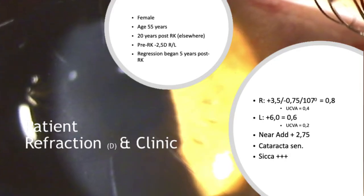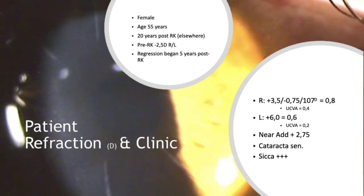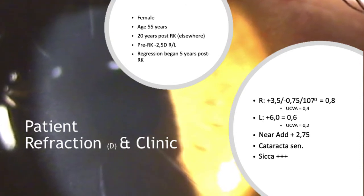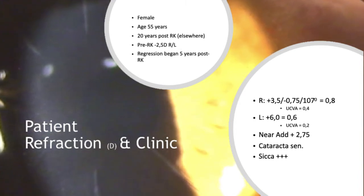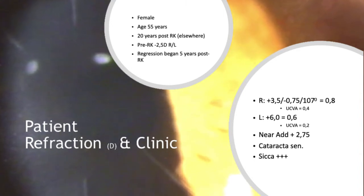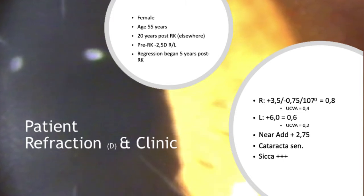At the time of surgery, our patient was 55 years of age. She had an RK 20 years ago elsewhere. The primary pre-refraction was minus 2.5 diopters, and regression set in 5 years after the refractive surgical procedure and continued for about 10 years. Meanwhile, she turned out to become hyperopic with plus 3.5 diopters on the right eye and plus 6 diopters on the left eye. Uncorrected visual acuity was 0.4 on the right and 0.2 on the left eye. Best corrected visual acuity was 0.8 and 0.6. The slit lamp revealed an incipient cataract, which very probably was the cause for significant photophobia and the reduction of visual acuity.